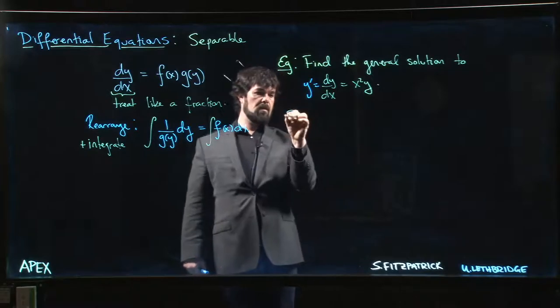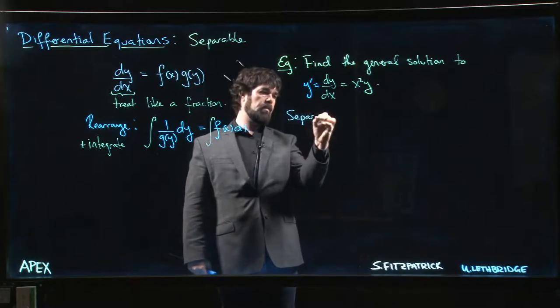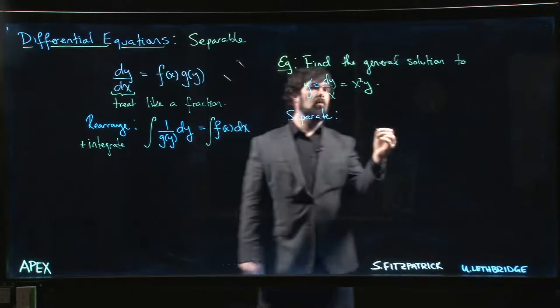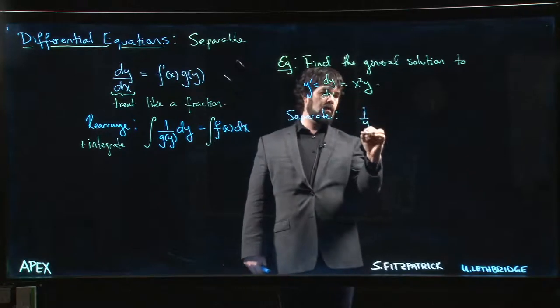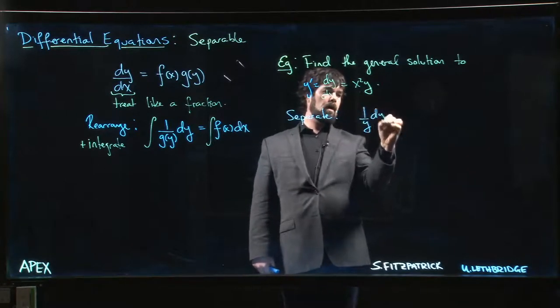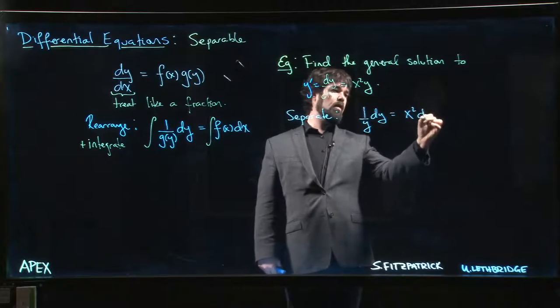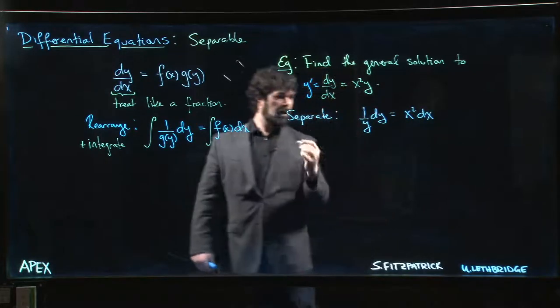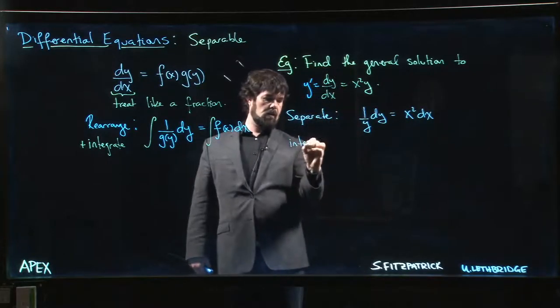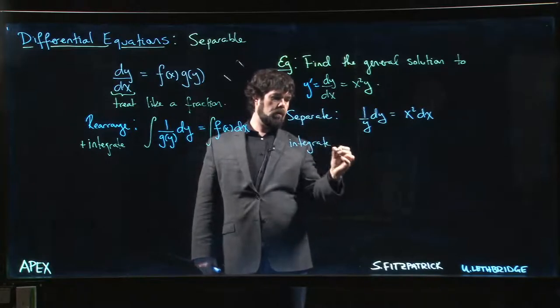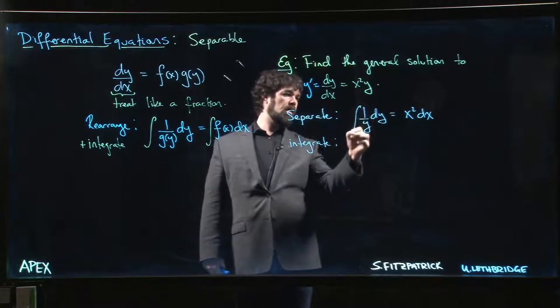We separate, so we need to get 1 over y on that side times dy is equal to x squared times dx. And now we integrate. So we take the integral of this side, we take the integral of that side.